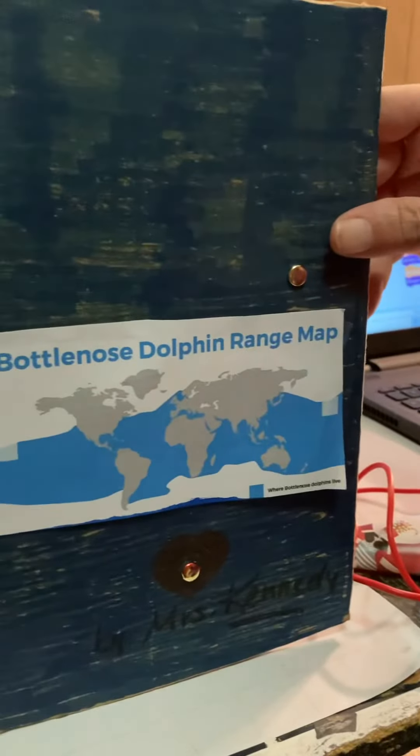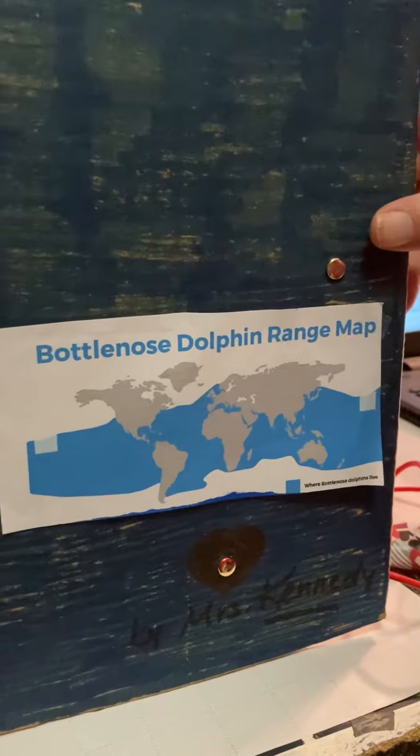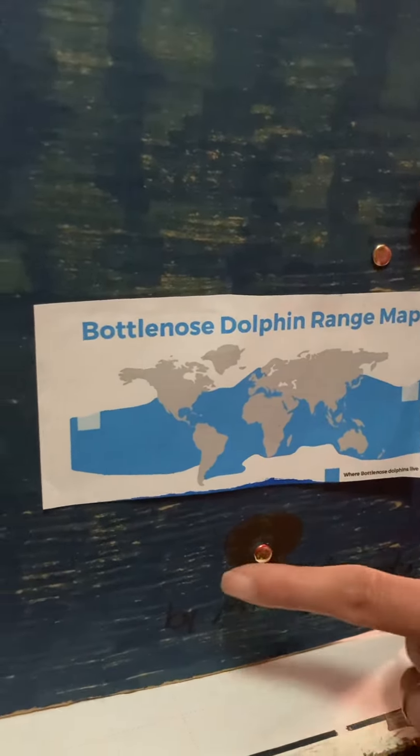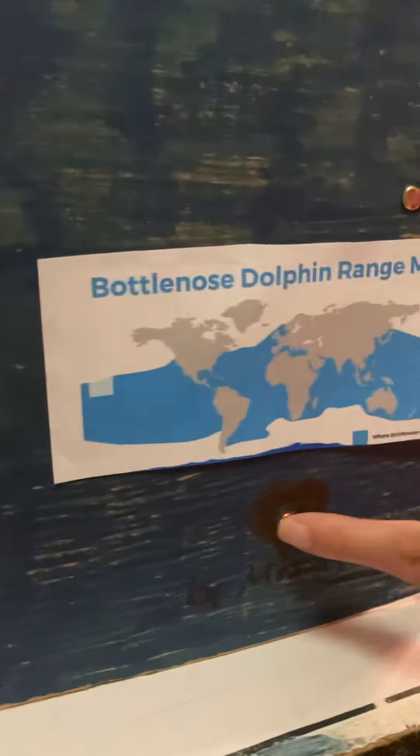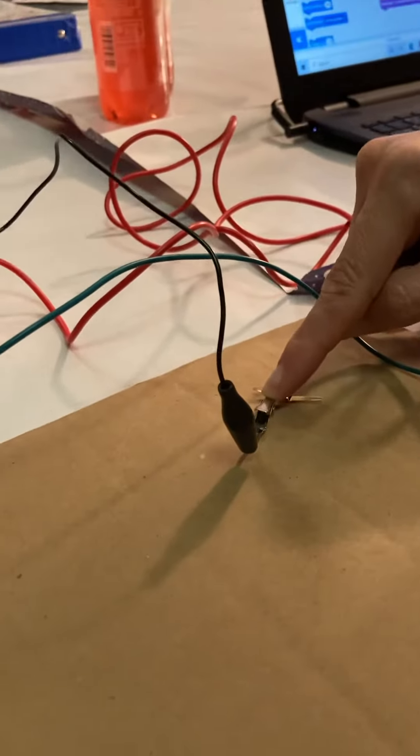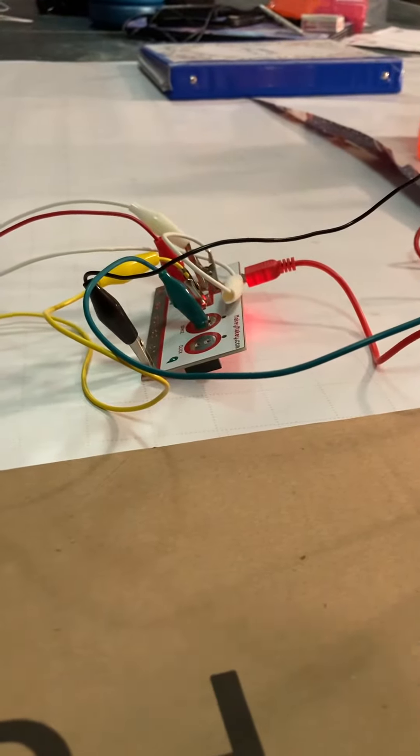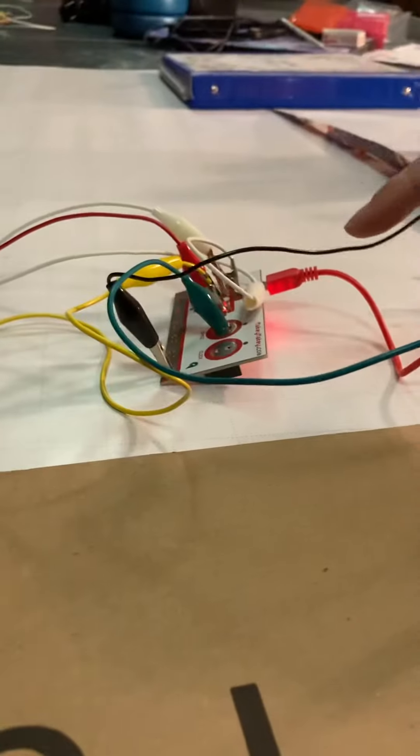If you're not making any sound, here's some troubleshooting tips. One, make sure your ground wire is connected from the back of the brass fastener into the earth. If it's not connected, it's not going to work.